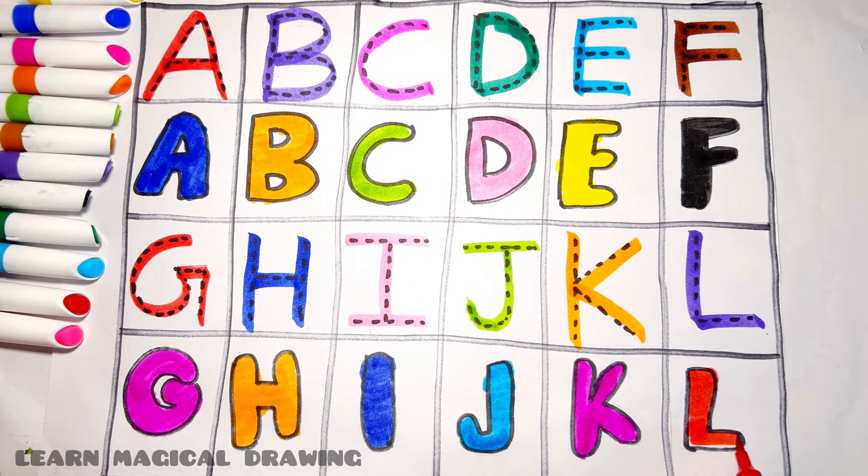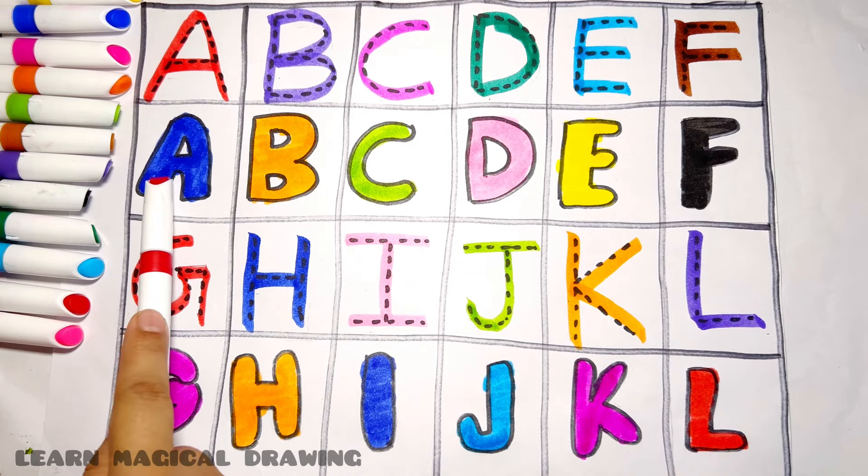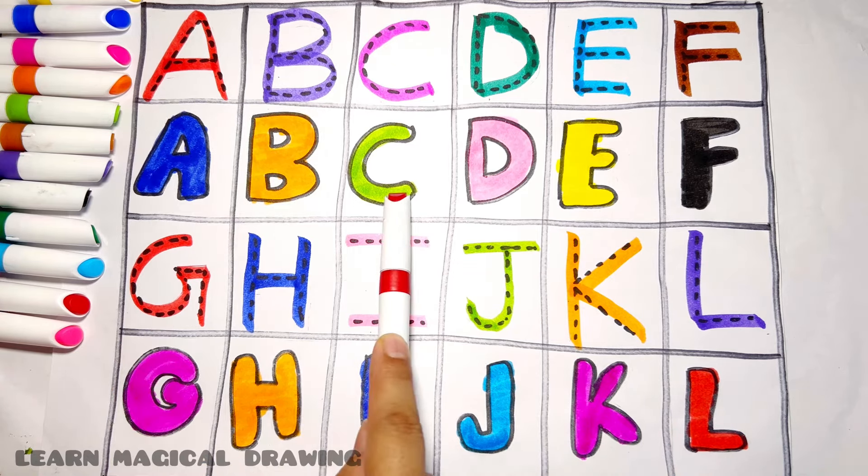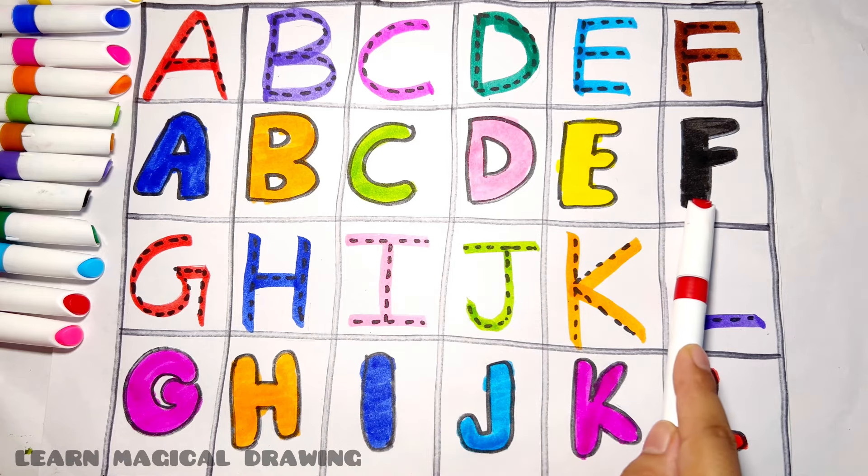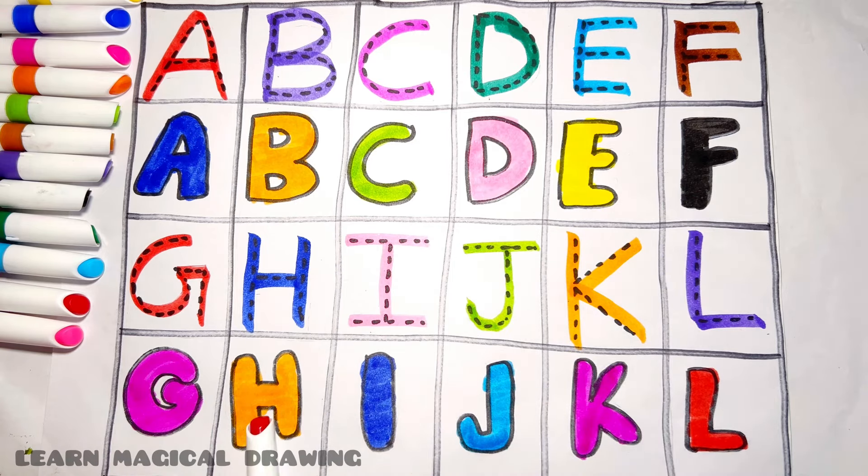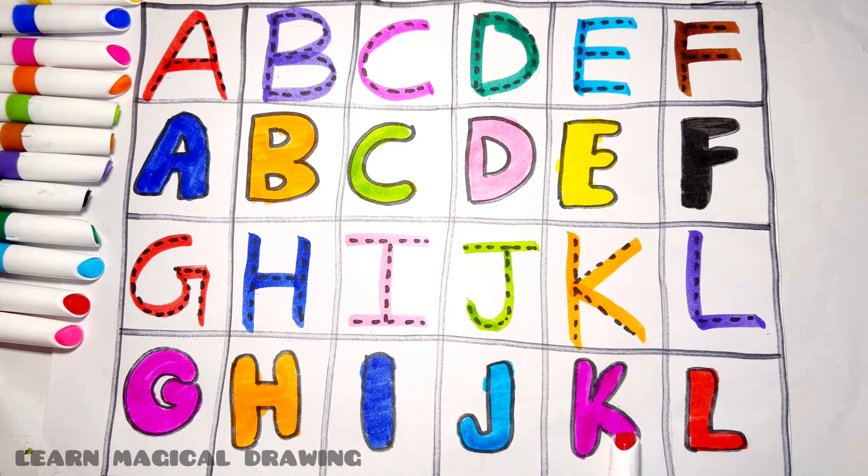N for leaf. Read it again: A, B, C, D, E, F, G, H, I, J, K, L. Like and subscribe for more videos.